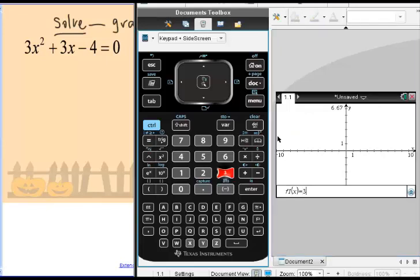So down here in our function, we're going to put in 3x² + 3x - 4 and go ahead and graph that.